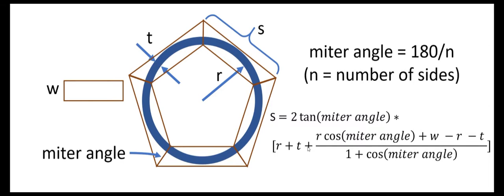Here is the formula for that side length. It's a bit complicated, but essentially it's two times the tangent of the miter angle times this whole expression. And again, that will be the side length that best positions the circle within the polygon that you've built.